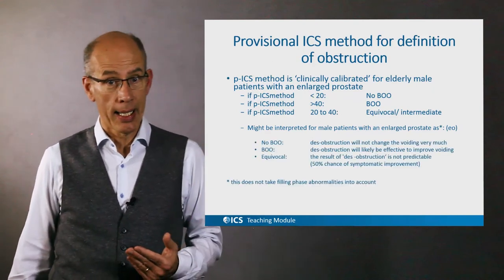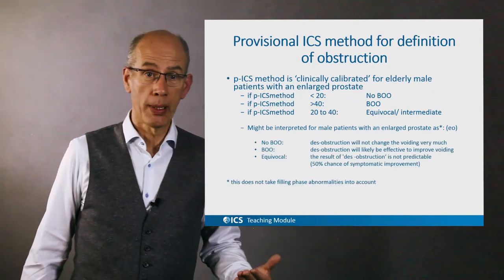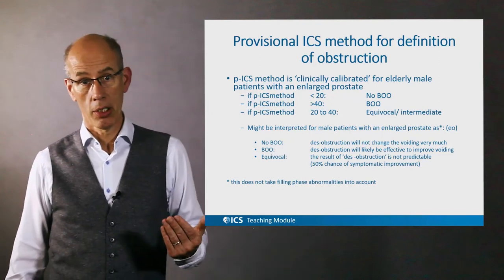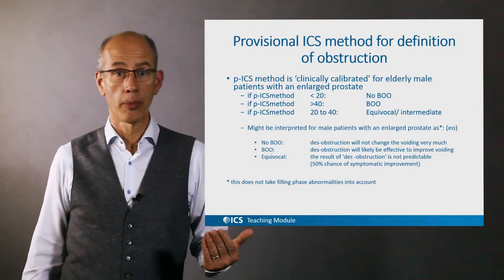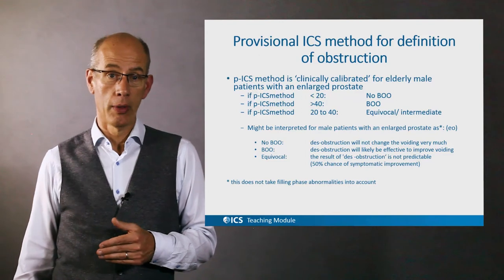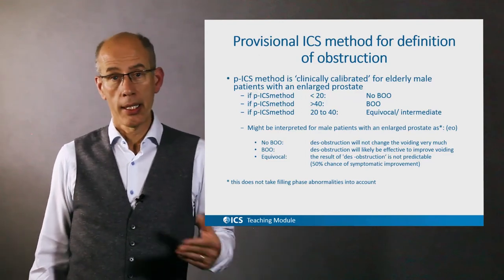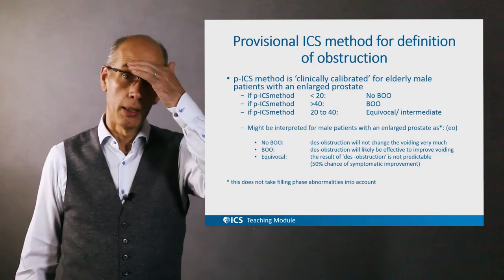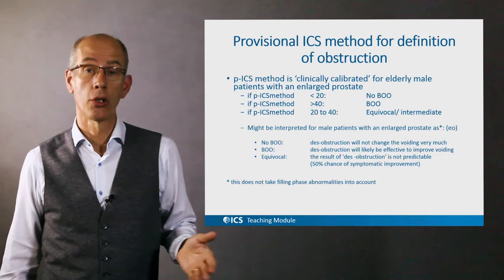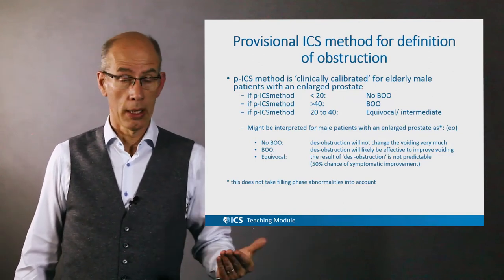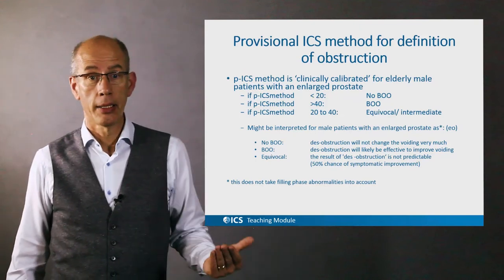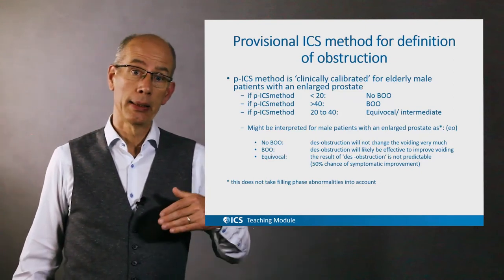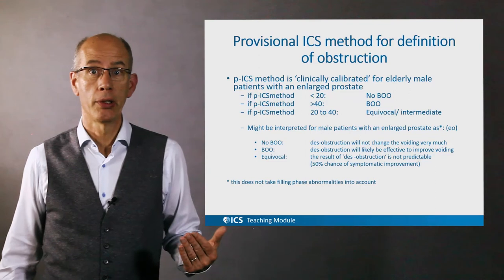Clinically, in male patients with a large prostate, when there is no bladder outlet obstruction, treating obstruction will not change voiding very much by itself. When there is bladder outlet obstruction, treating that obstruction will be effective. In the equivocal zone, there is a 50-50 chance of symptomatic or objective improvement. However, this is only one element of urodynamic testing and does not take other filling phase abnormalities into account, which may be relevant to the patient's symptoms as well.